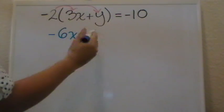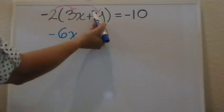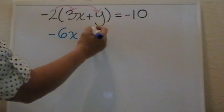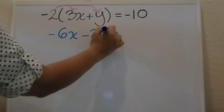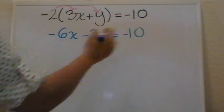So, negative times a positive is negative. 2 times y—don't forget there's an invisible one there, if you prefer to see it that way—that will be 2 times 1 is 2, drop the y equals negative 10.